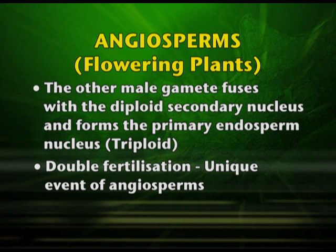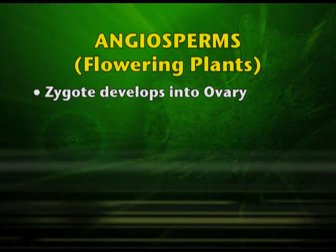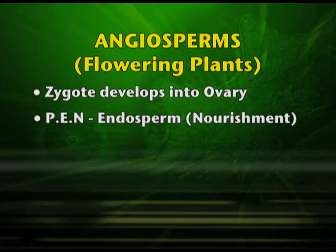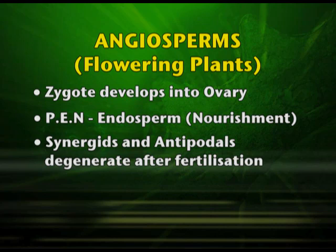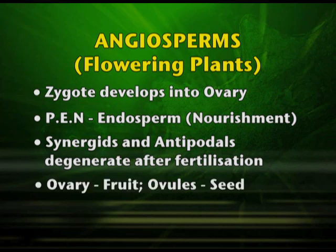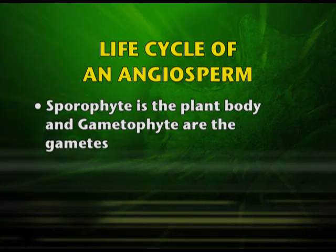Double fertilization is a unique event in angiosperms: the first fertilization is syngamy — fusion of the male gamete with the egg cell — and the second is triple fusion. The zygote develops into the embryo, the primary endosperm nucleus develops into the endosperm which is responsible for nourishment, and the synergids and antipodal cells degenerate after fertilization. After fertilization, the ovary develops into the fruit and the ovules into the seed.